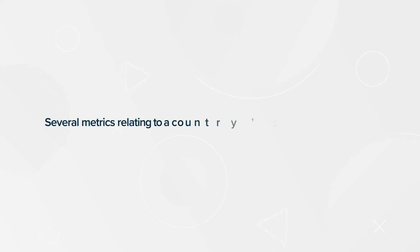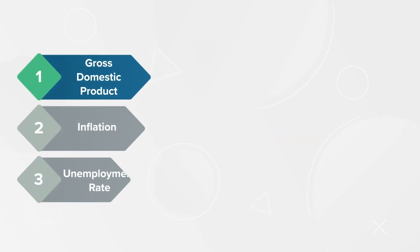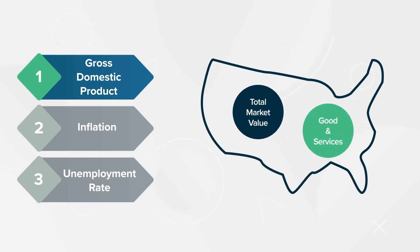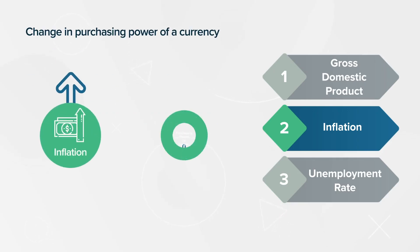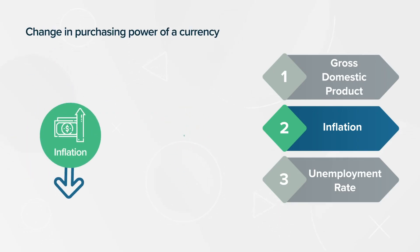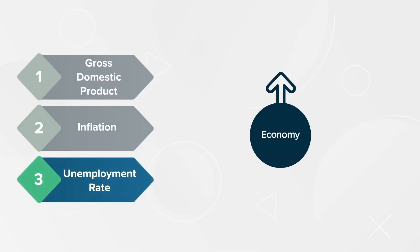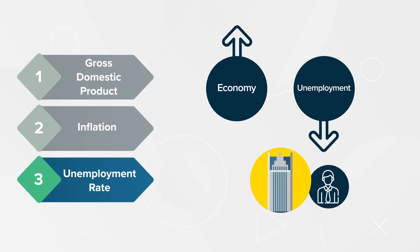Several metrics relating to a country's economic health are used to study macro-environments. Some of the more common ones are gross domestic product — the total market value of all goods and services produced within a country's borders — where a higher GDP signals a growing economy. Inflation refers to the change in purchasing power of a currency; high inflation means a currency is losing purchasing power and low inflation can indicate a flat economy. Unemployment rate: a growing economy has low unemployment rates because businesses tend to add more staff to meet demand for their product.